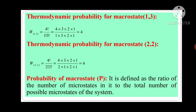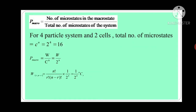Now, the probability of a macrostate P is defined as the ratio of the number of microstates in it to the total number of possible microstates of the system. So, P_macro is given by the number of microstates in that macrostate upon the total number of microstates of the system.